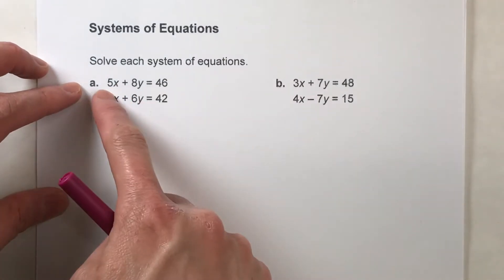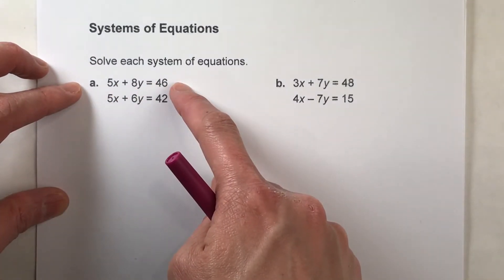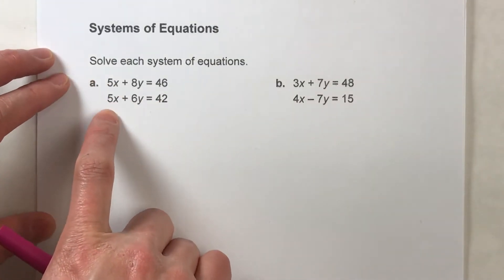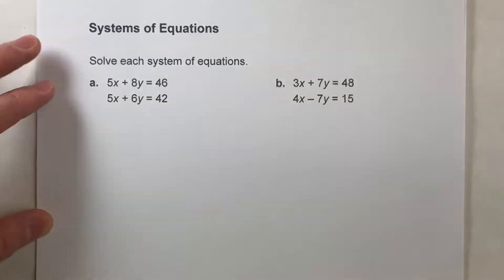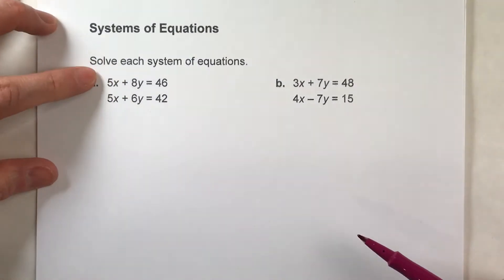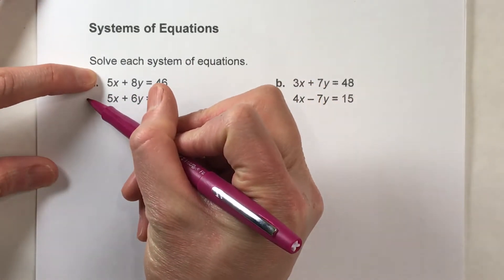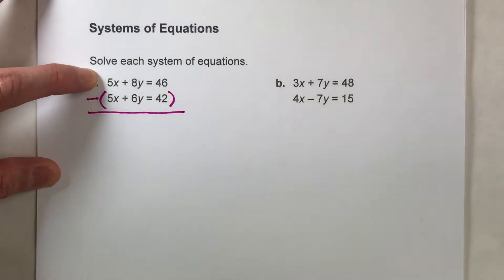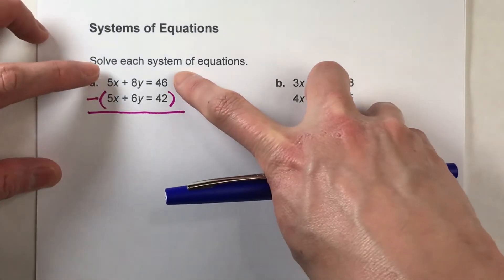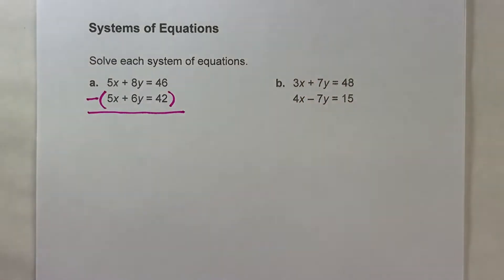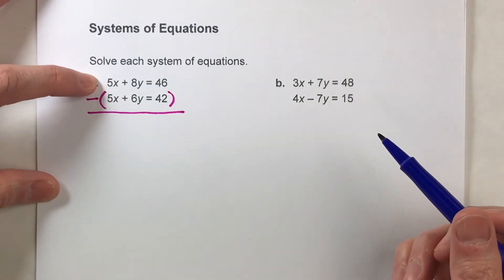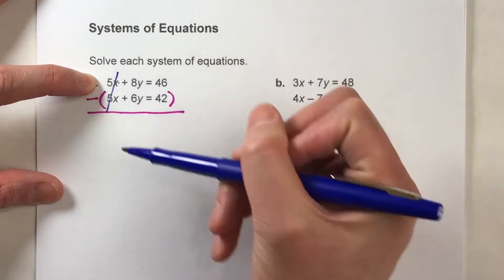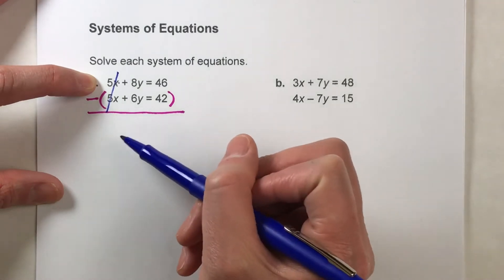So for this first example, we've got 5x plus 8y equals 46, and we've got 5x plus 6y equals 42. Notice again, the number in front of the x's are exactly the same. They kind of match up, if you think of it that way. So what we're going to do is we're going to take the two equations, and we're going to subtract the second equation from the first equation. So we're actually taking the entire second equation and subtracting it from the first one. 5x's, take away 5x's, leaves me with no x's. I've eliminated all the x's.